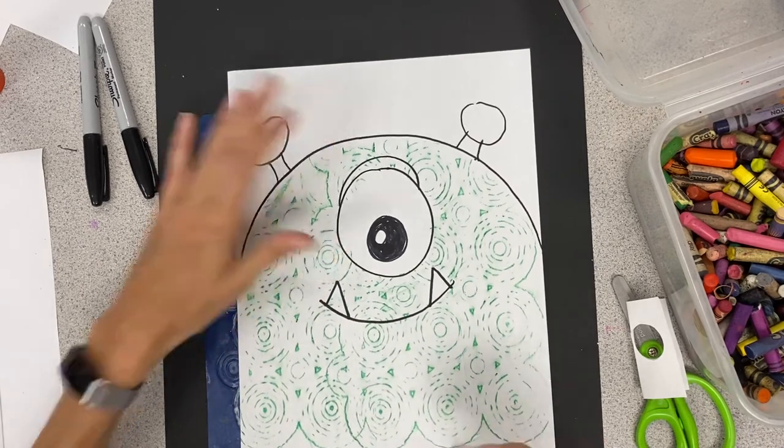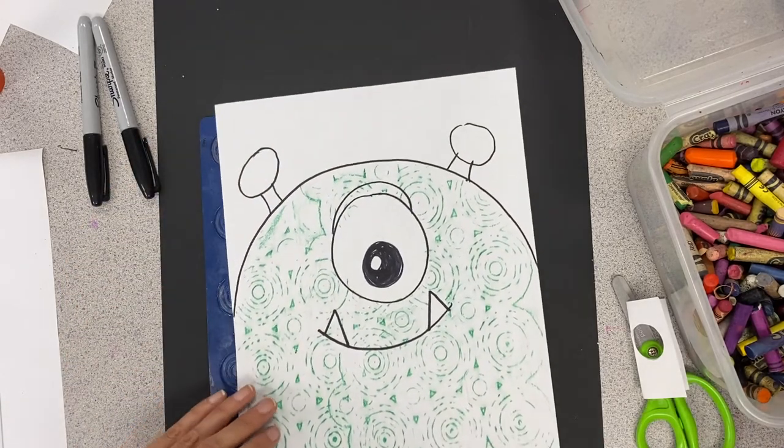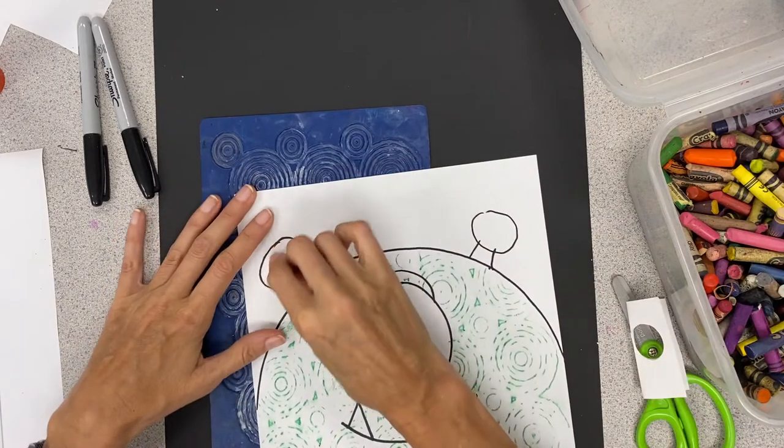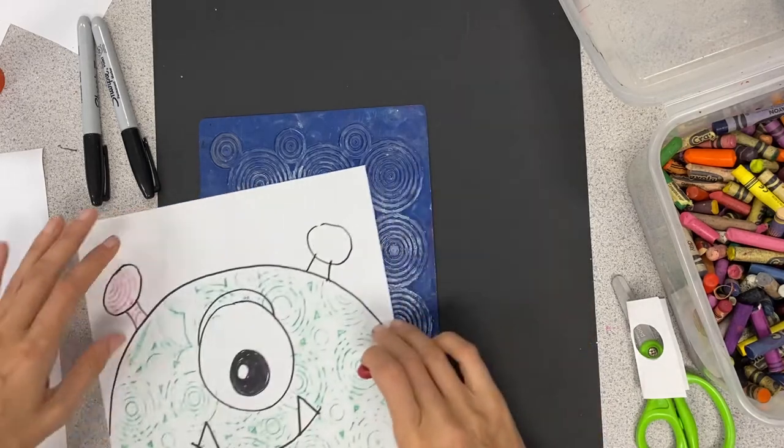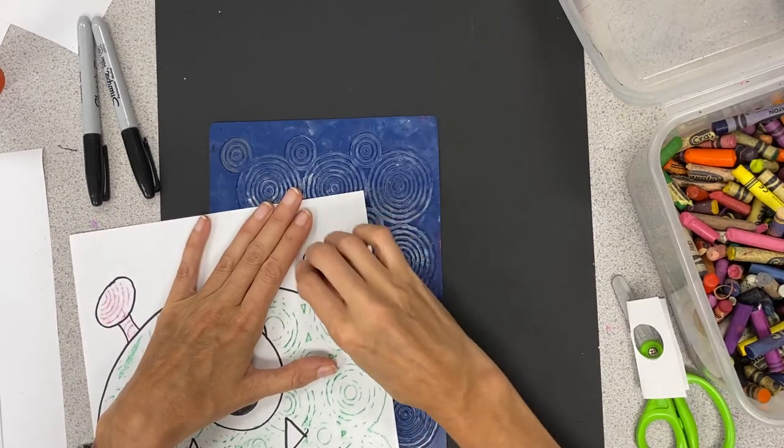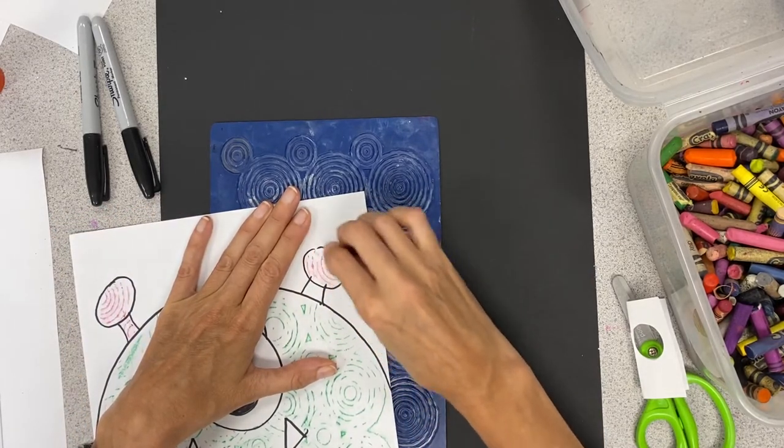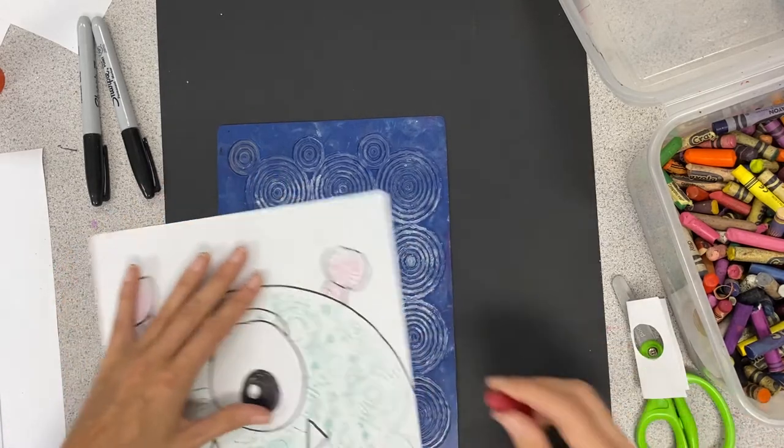All right, he's pretty cool looking. So now maybe I'll choose a different color for up here. I still have my texture, add a little red. Move this little texture with my red, and then maybe I'll make a red eyelid.